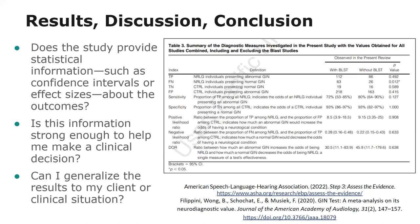Essentially, you want to know whether the evidence is strong enough to make a clinical decision, and you want to determine whether you can generalize the results to your clients. In our example, we may not be able to generalize the results to our clients because it was looking at adults and we were looking at children.